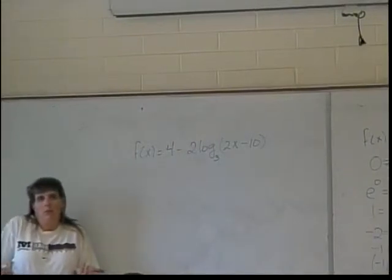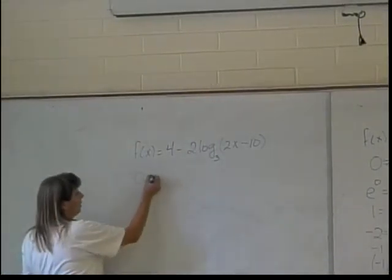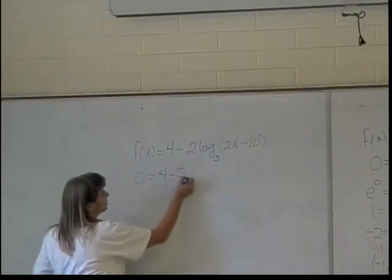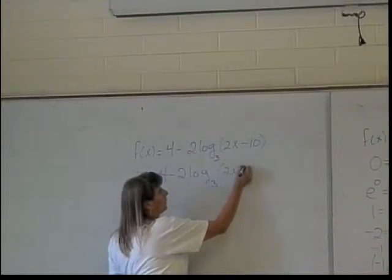So it's an x-intercept. Once again I'm going to change my f(x) to 0, but now I'm going to have to do a lot more stuff. So we're going to have 0 equals 4 minus 2 log base 3 of 2x minus 10.